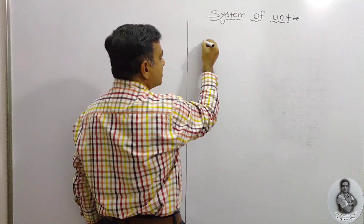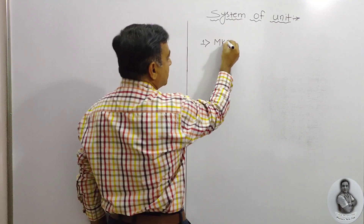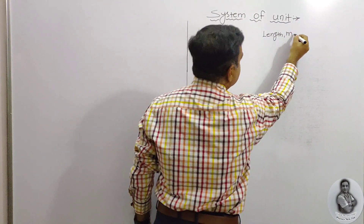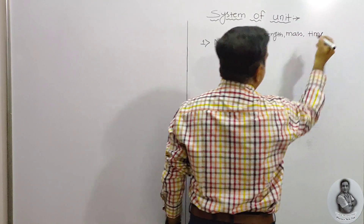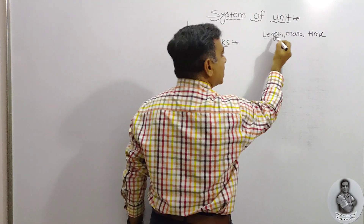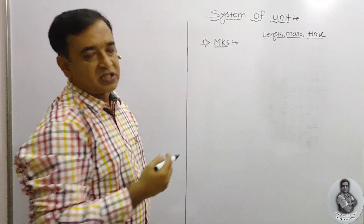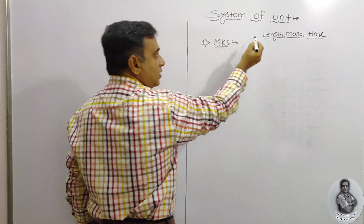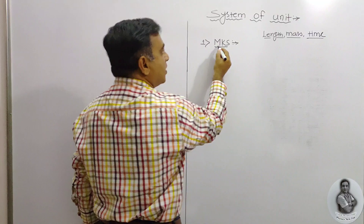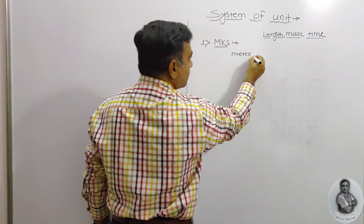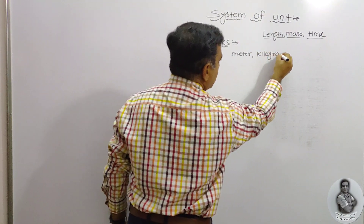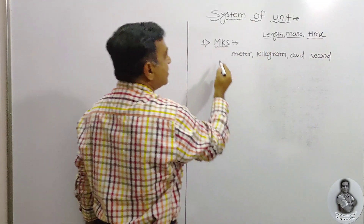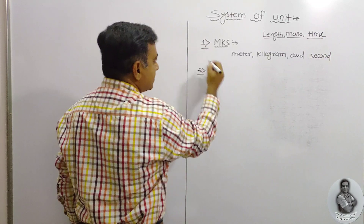The first system is MKS. In this MKS system, the three physical quantities are length, mass, and time. The units of length, mass, and time decide the type of system. In the MKS system, the unit of length is meter, the unit of mass is kilogram, and the unit of time is second. This is known as the MKS system.